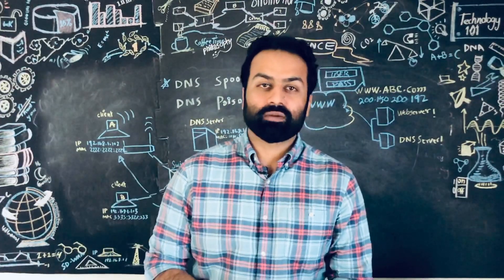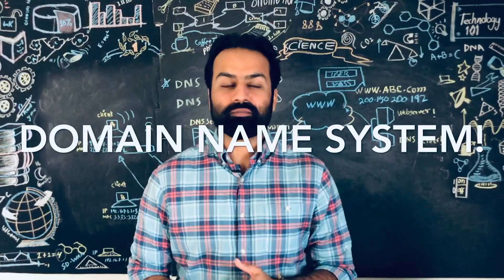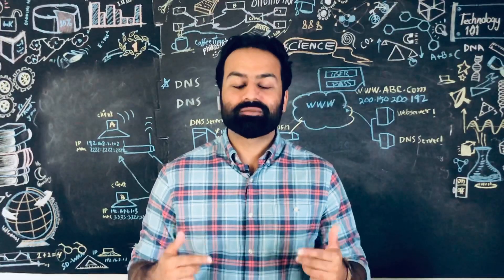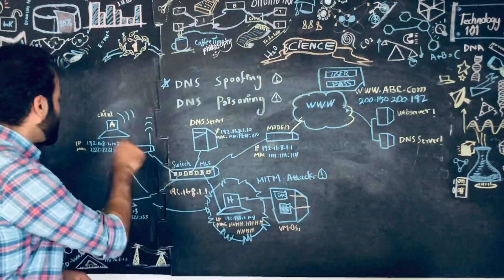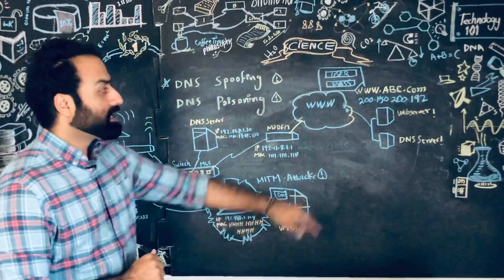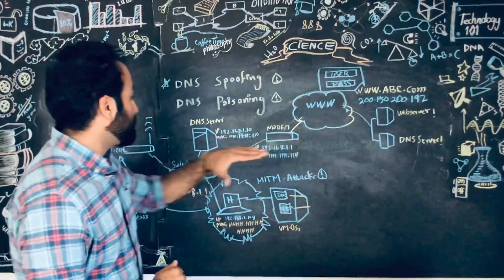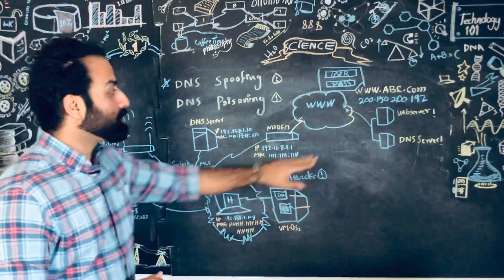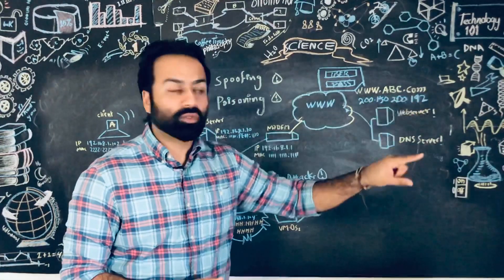Before I talk about DNS spoofing, it would be a good idea to explain how DNS works. DNS stands for Domain Name System. The main purpose of DNS is to translate hostnames to IP addresses and IP addresses to hostnames. For example, if client A wants to access www.abc.com and we have no DNS, client A must type 200.150.200.192 instead.